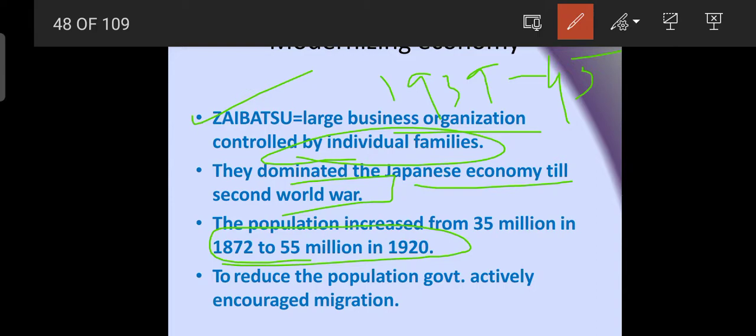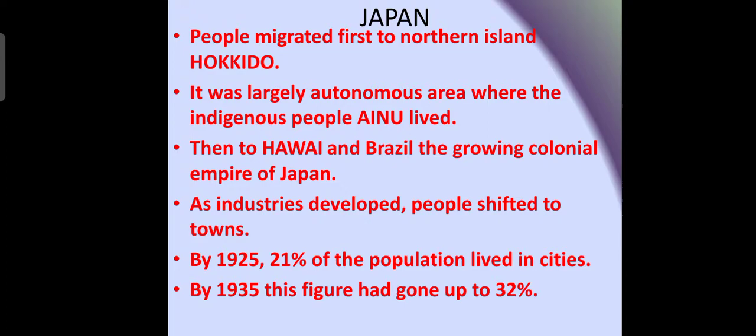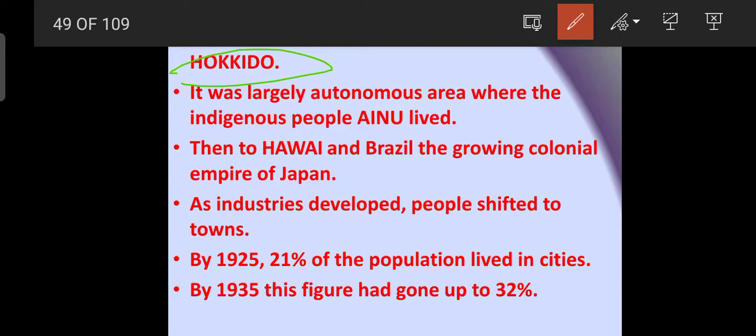As the Japanese economy developed and population grew, the government actively encouraged migration so that people would move from Japan to other parts of the world. People first migrated to Hokkaido, a largely autonomous area where indigenous people — the Ainu tribal group — were living.